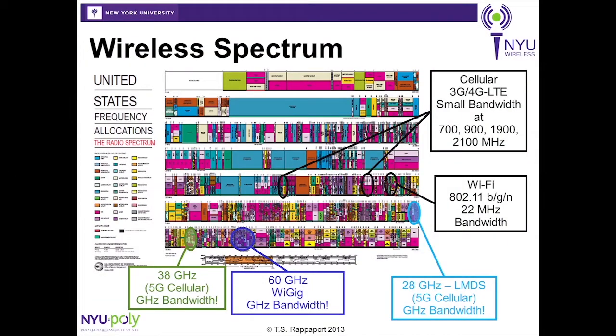Today, the cellular world operates in small slices of frequency below 5 GHz. All of these spectrum bands contain a sliver of bandwidth such that a cell tower can only transmit a certain amount of capacity, even using today's 4G LTE technology.